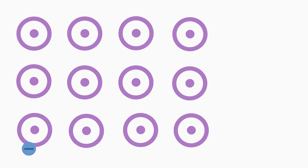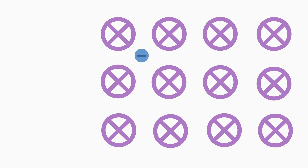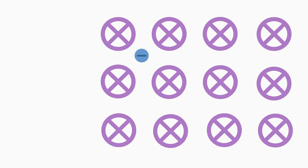What happens if we change the magnetic field direction by 180 degrees? Now the magnetic field points into the screen. If the electron now moves from left to right through this magnetic field, it is no longer deflected upwards, but downwards.